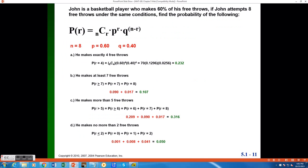I want to go through an example of a binomial experiment and how to compute the probabilities for different results. Here we have an example where John is a basketball player who makes 60% of his free throws. And the question asks us, if John attempts eight free throws under the same conditions, let's find the probability of a few different situations.